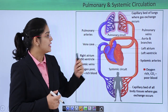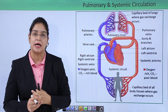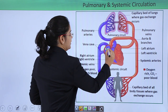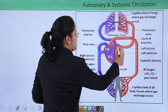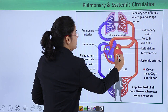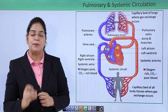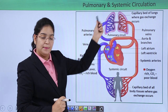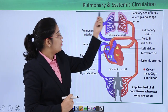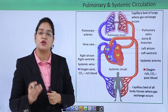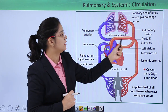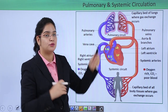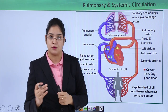In pulmonary circulation, oxygenation of blood occurs. The heart has a right atrium, right ventricle, left atrium, and left ventricle. In pulmonary circulation, deoxygenated blood from the right ventricle goes to the lungs through the pulmonary arteries. Oxygenation or purification of blood occurs there, and then the blood comes back to the left atrium of the heart through the pulmonary vein. This smaller circulation throughout the lungs is called pulmonary circulation.